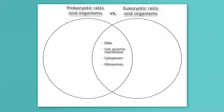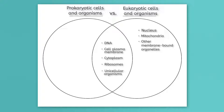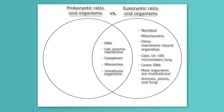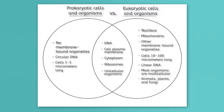The final similarity is that all prokaryotes and some eukaryotes are unicellular organisms. A eukaryotic cell is distinguished by a membrane-bound nucleus that holds its DNA, a membrane-bound mitochondria that produces the cell's chemical energy, and other membrane-bound organelles. Eukaryotic cells are usually 10 to 100 micrometers, eukaryotic DNA is linear, and most but not all eukaryotes are multicellular, including all animals, plants, and fungi. Prokaryotic cells don't have any membrane-bound organelles; their DNA is circular and just freely floats in the cytoplasm. Prokaryotic cells are smaller at 1 to 5 micrometers, and all prokaryotes are unicellular, including all bacteria and archaea.